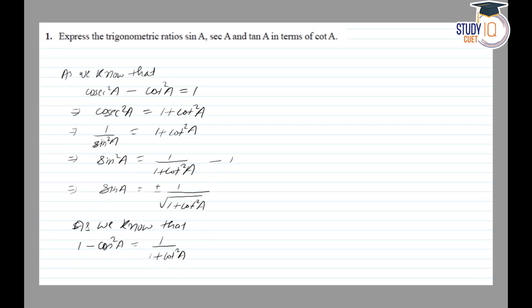Let's call this equation number one. Now using the identity sin²A + cos²A = 1 in equation 1.